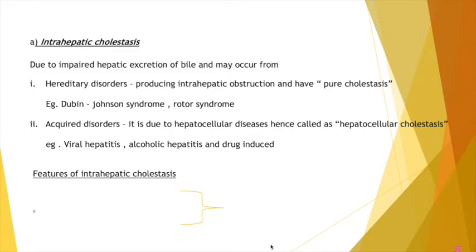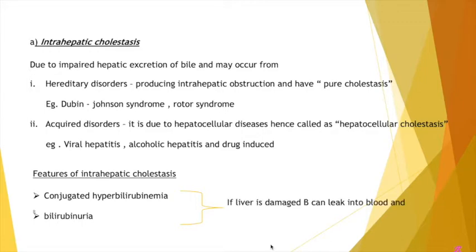Moving on to the features of intrahepatic cholestasis: in cholestasis there will be conjugated hyperbilirubinemia, and next is bilirubinuria. Since the liver is damaged, bilirubin can leak into the blood and urine. So there will be conjugated hyperbilirubinemia and bilirubinuria.